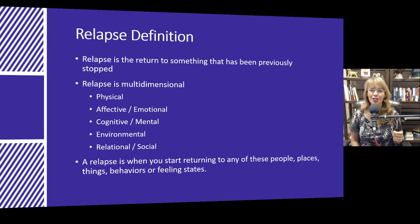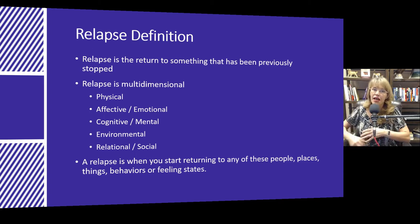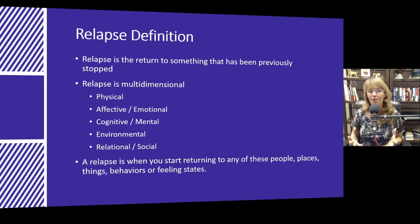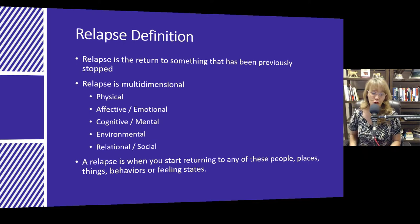Relapse is multidimensional, just like your triggers are. There are physical, emotional or affective, cognitive, environmental, and relationship aspects to relapse. A relapse is when you start returning to any of these people, places, things, behaviors, or feeling states. Just because you start to relapse in the physical dimension or in the relationship dimension doesn't mean you have to continue down that path to a full-blown relapse. The beauty of recognizing the signs and symptoms of relapse in each of these areas is it lets you catch it sooner and start doing things that are going to help you prevent a full-blown relapse.